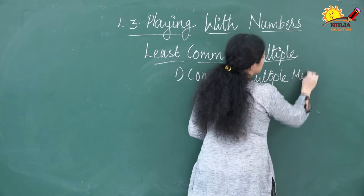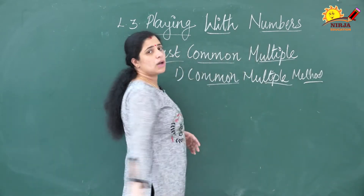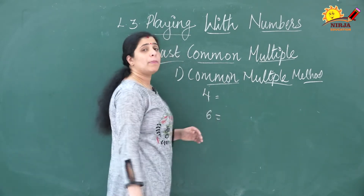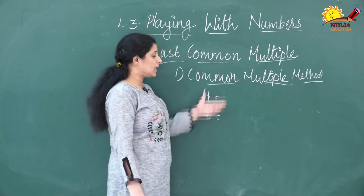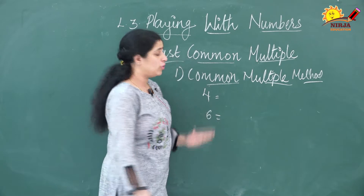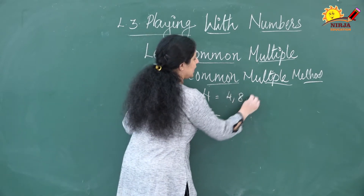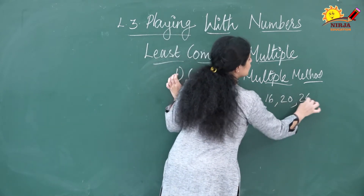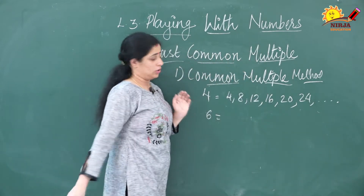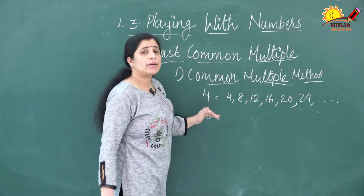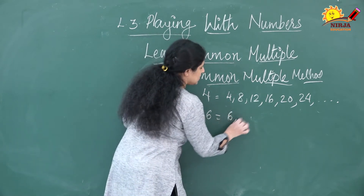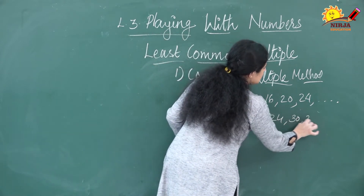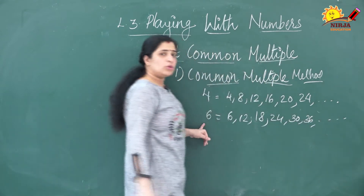In the common multiple method, you have to list the multiples of the numbers. Suppose I am taking two numbers: 4 and 6. You have to write the multiples of 4 and 6. The multiples of 4 are: 4, 8, 12, 16, 20, 24, and it will go on. Similarly, the multiples of 6 are: 6, 12, 18, 24, 30, 36. I am writing up to this only.